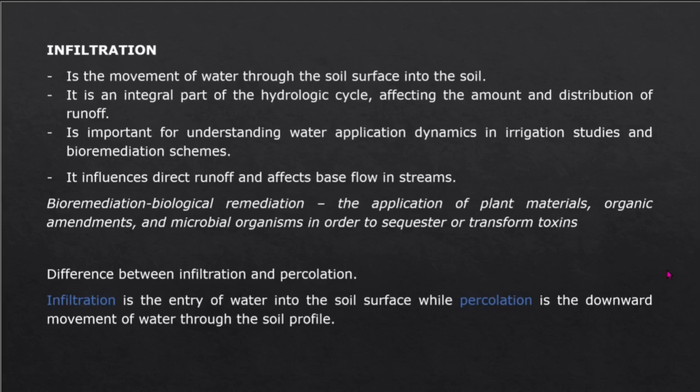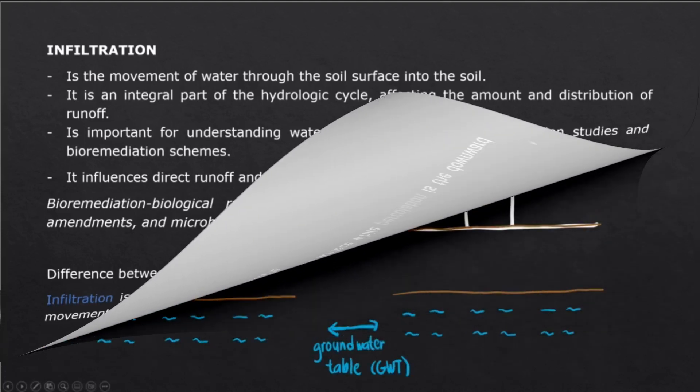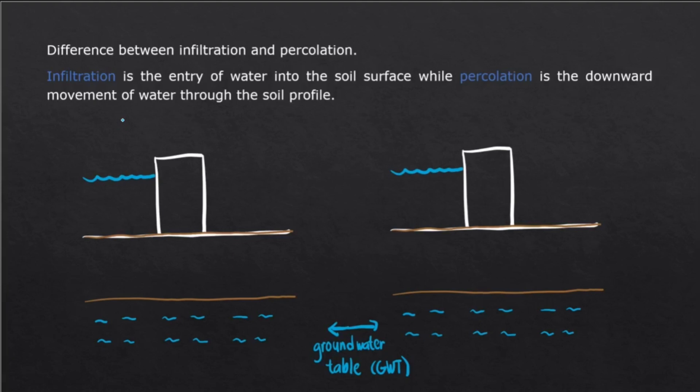First, we're gonna define the difference between infiltration and percolation. Infiltration is the entry of water into the soil surface, while percolation is the downward movement of water through the soil profile. Let's say these are dams and then this is our soil. Infiltration is the entry of water into the soil surface, where water enters and the movement just stays in here. However, when water enters the soil surface and then moves down until it joins the groundwater table or GWT, that's what we call percolation. While seepage, although not included here, water is gonna move this way, entering the soil and then going back up here.